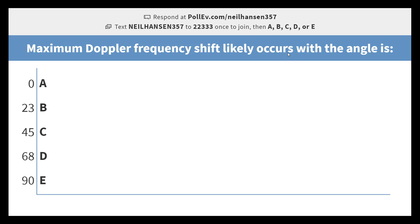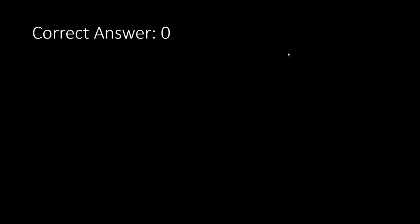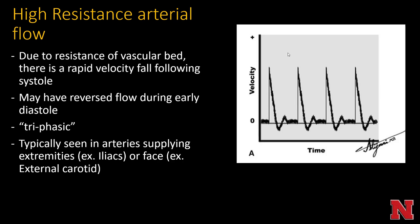Maximum Doppler frequency shift likely occurs when the angle is zero degrees. High resistance arterial flow: due to the resistance of a vascular bed, there is a rapid velocity fall following systole. You may see reverse flow during early diastole — this is a triphasic waveform typically seen in arteries supplying the extremities, like the iliacs or branches of the external carotid. The peak looks like a tall, sharp mountain, then during early diastole it dips — sometimes below the baseline — due to elastic recoil of the arteries causing some backward flow, then may come above the baseline again before the next cycle.